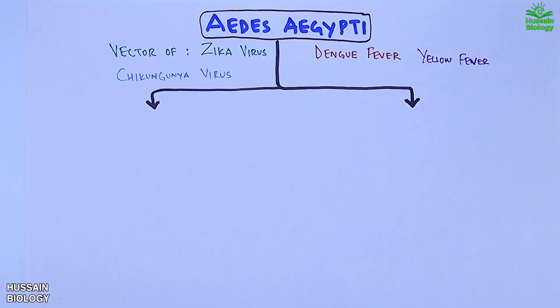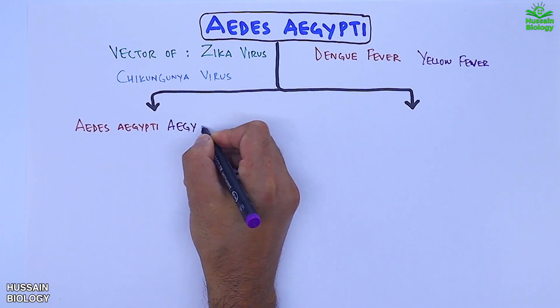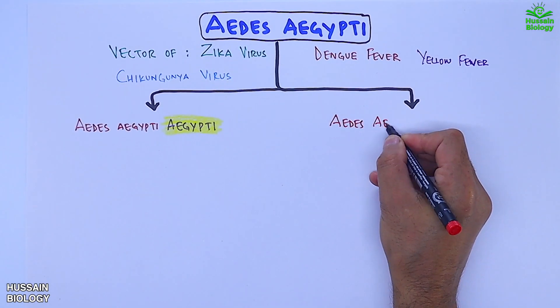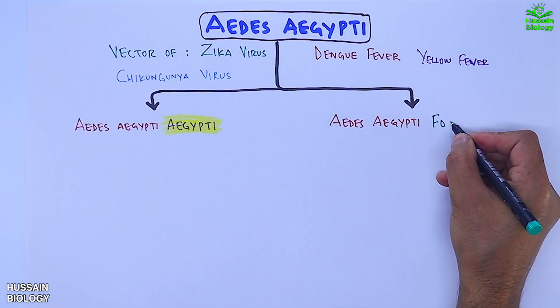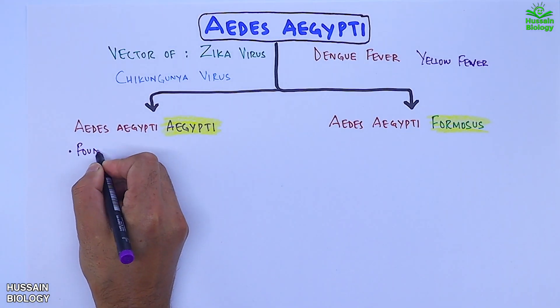The first one is the Aedes aegypti aegypti subspecies and the second one is the Aedes aegypti formosus subspecies. The first one, the aegypti subspecies, is found in human habitats.